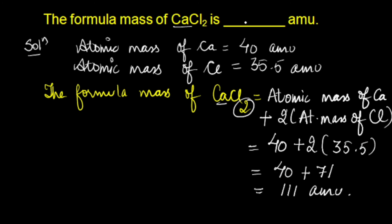So, our answer is 111 amu, the formula mass of CaCl2.